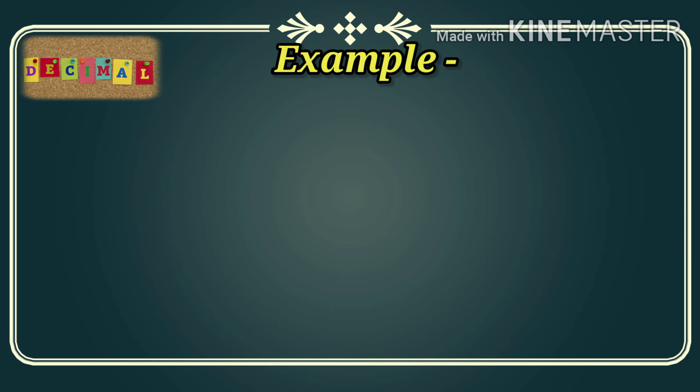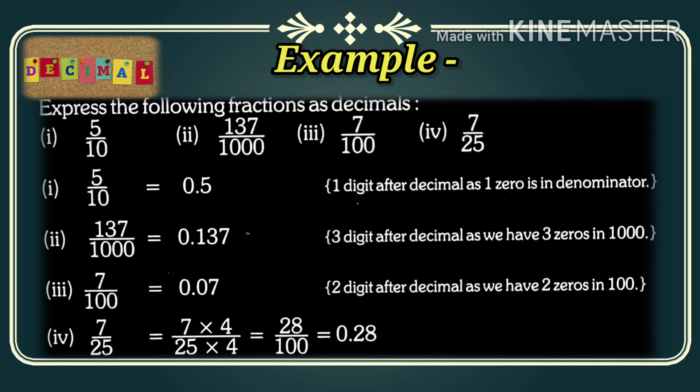For better understanding, see the examples. Express the following fractions as decimals. First example: 5/10 — here 5 is the numerator and 10 is the denominator, so 1 digit after the decimal gives 0.5. Next, 137/1000 — 3 digits after the decimal because there are 3 zeros in 1000, so the answer is 0.137. Next, 7/100 — 2 digits after the decimal because there are 2 zeros in 100, so the answer is 0.07.